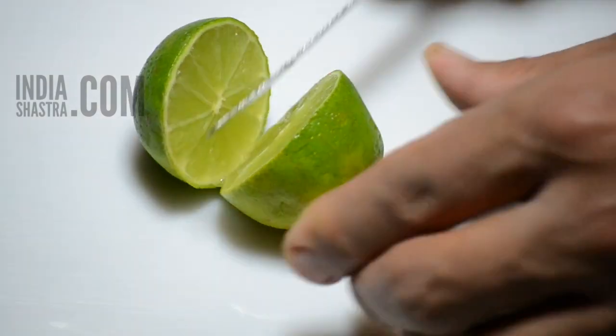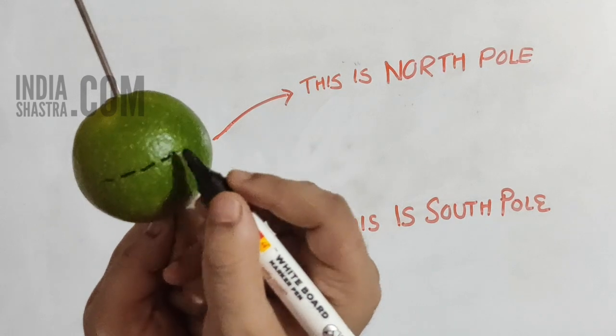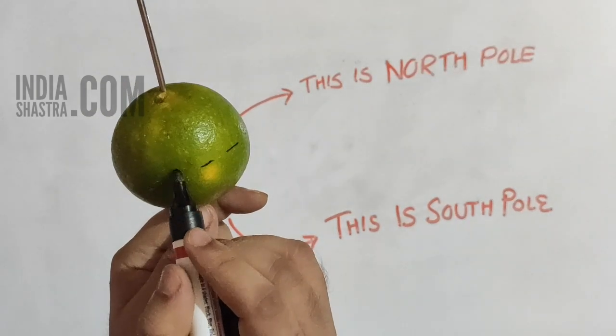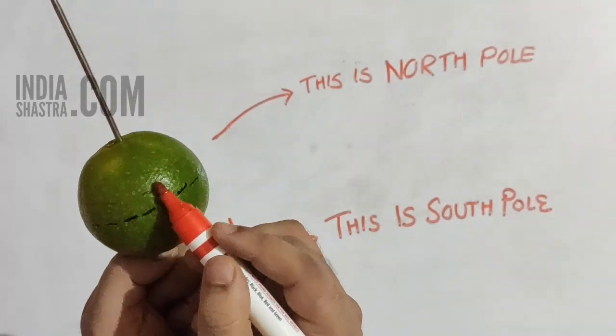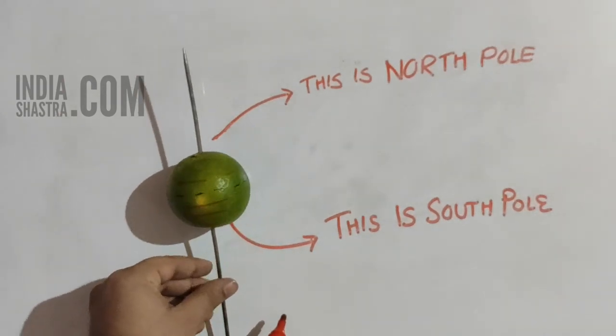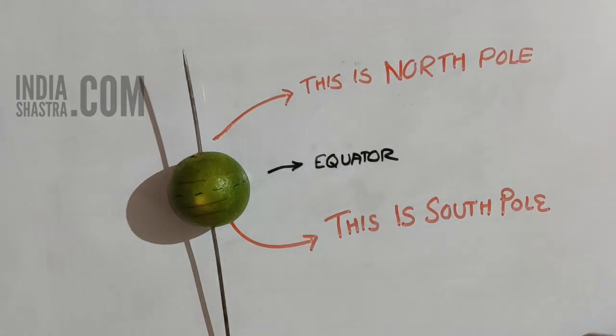When I cut this globe into equal parts, this line is an equator. Equator is an imaginary circular line. And all the parallel circles from the equator up to the poles are called parallels of latitudes. One thing you should note is that latitudes are measured in degrees.